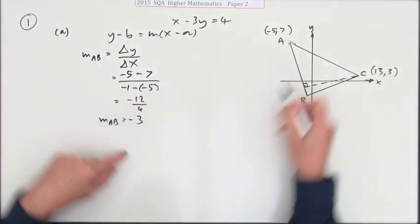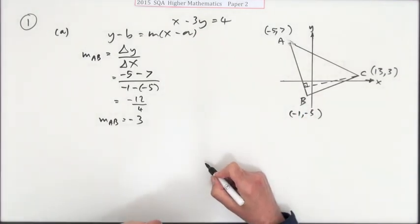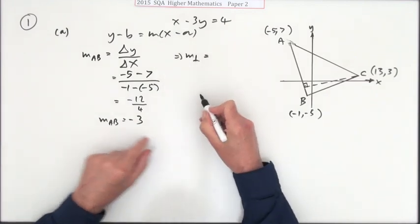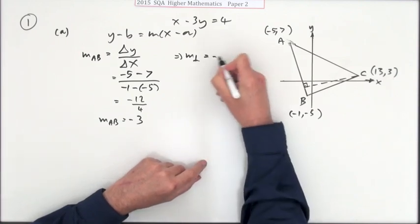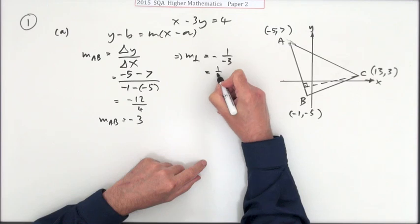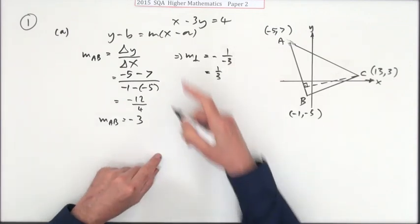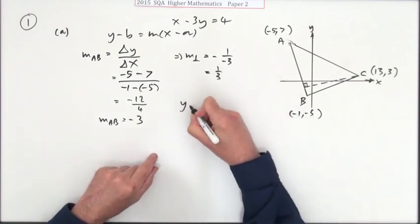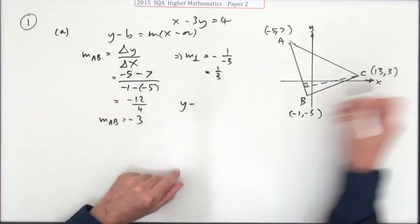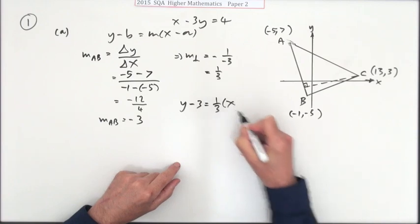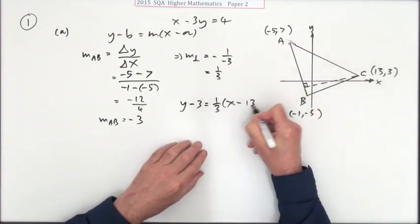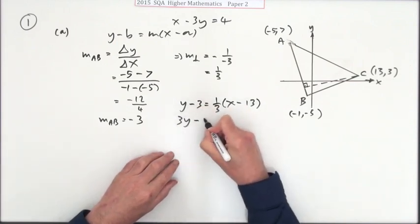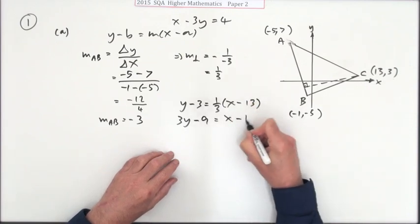That means straight away I can say that the perpendicular one will be, you could just state it as a third or you can say the negative of the reciprocal, whichever way. That means I can feed it into the line now. I've got y minus the y coordinate which is 3 is a third of x minus the x coordinate which is 13. Take the 3 across and multiply, 3y minus 9 leaves you with just one of them.